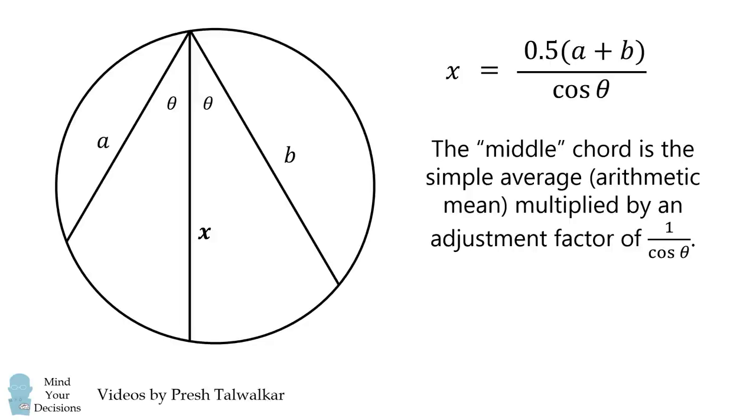The middle chord is the simple average or arithmetic mean multiplied by an adjustment factor of 1 over the cosine of theta. It's like we've discovered a new type of average of how chord lengths progress in a circle.